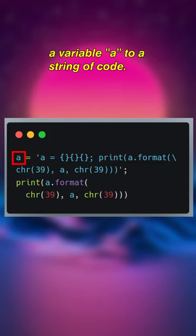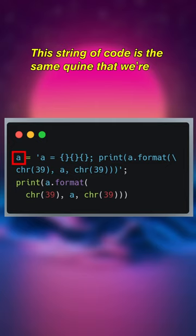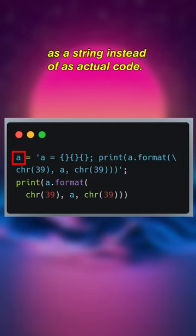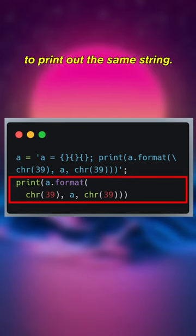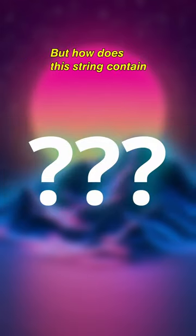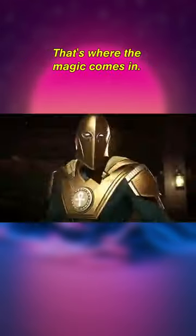The quine starts off by setting a variable 'a' to a string of code. This string of code is the same quine that we're looking at right now, just written out as a string instead of actual code. It then uses the print statement to print out the same string. But how does this string contain the same quine that it's printing out?